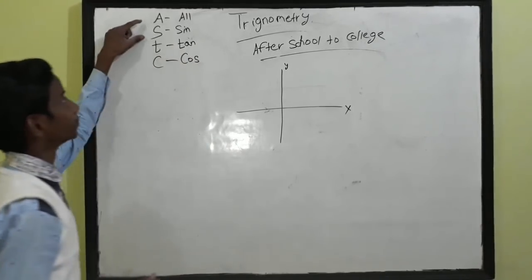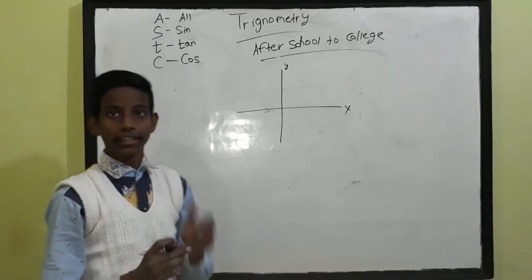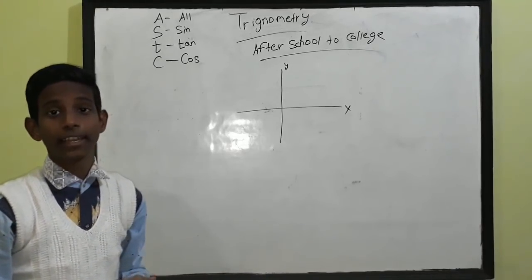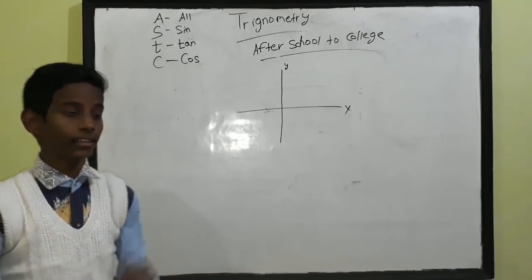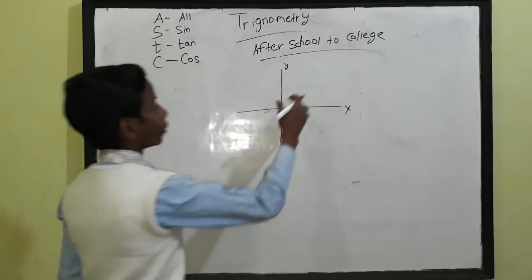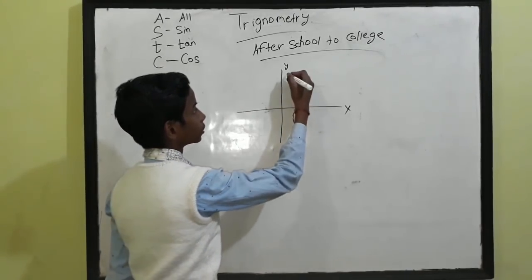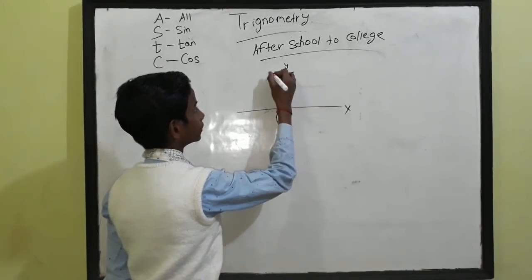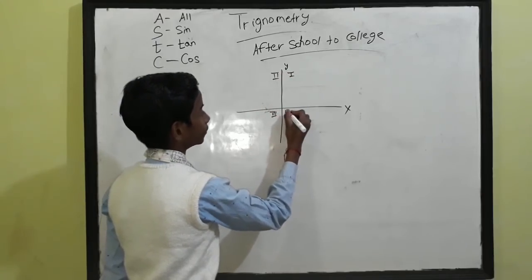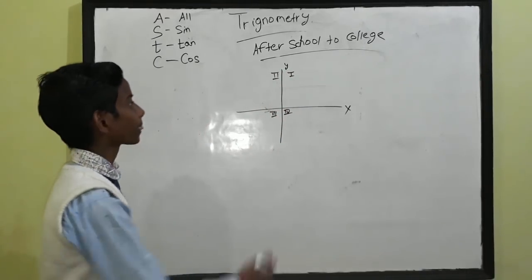Now see — sin theta, cos theta, tan theta, cosec theta, sec theta, and cot theta. Now we have to write these in the quadrants. This is the first quadrant, this is the second, this is the third, and this is the fourth. It's too easy.